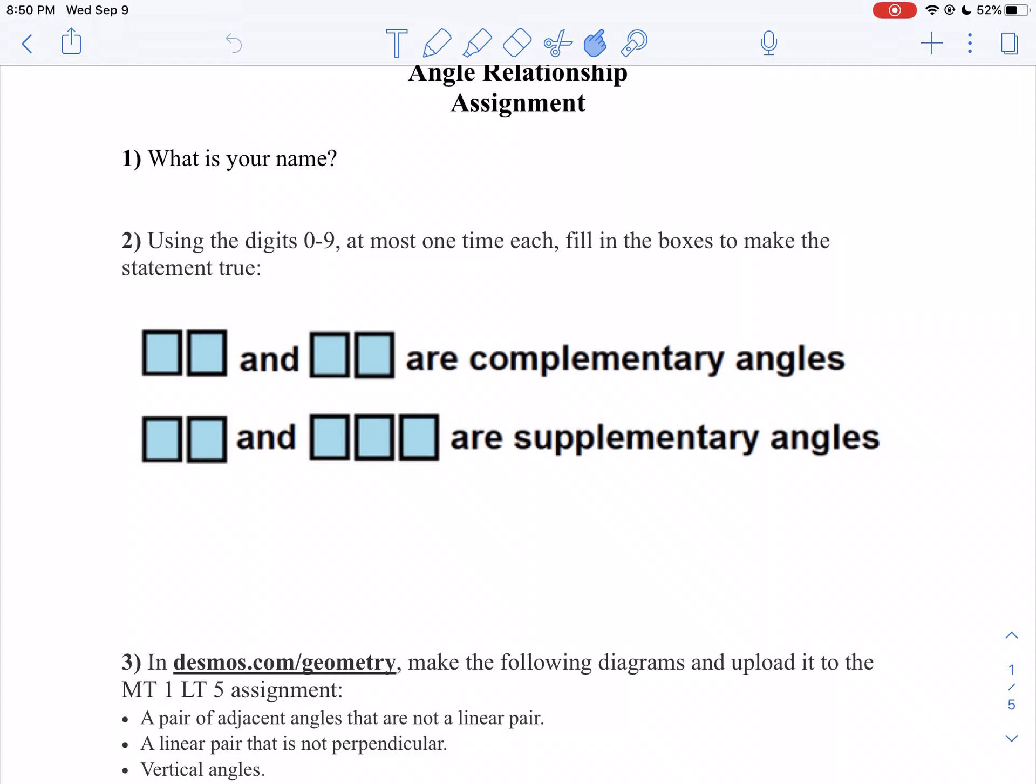Well, what does complementary mean? Complementary means this sum has to be 90 degrees. What does supplementary mean? It means this sum has to be 180 degrees.